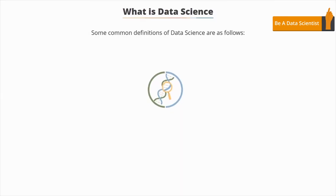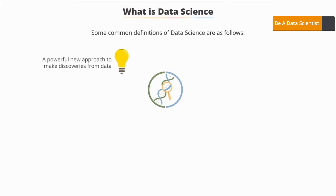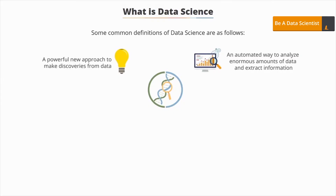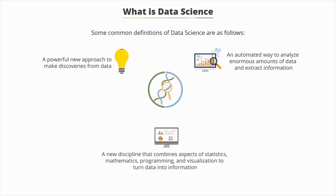What is data science? Let's start with some of the common definitions. Some say that data science is a powerful new approach for making discoveries from data. Others term it as an automated way to analyze enormous amounts of data and extract information from it. Still others refer to it as a new discipline which combines aspects of statistics, mathematics, programming, and visualization to gain insights.